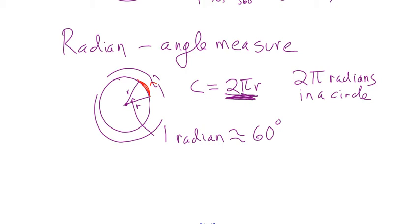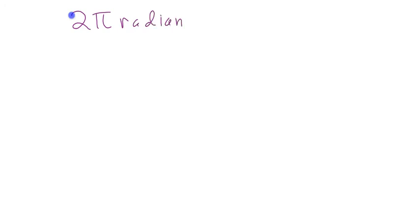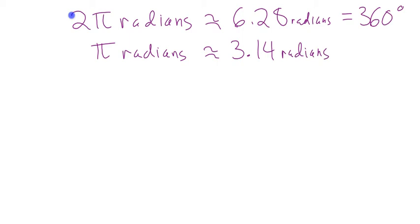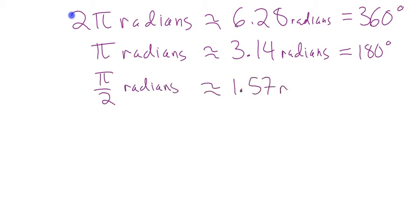We just need to know that there is such a thing as a radian. You're not going to be asked to convert, but here are some numbers to get familiar with. 2π radians, about 6.28 radians, equals 360 degrees. A semicircle is 180 degrees, so that's π radians, about 3.14 radians. And π/2 radians, about 1.57 radians, is 90 degrees.